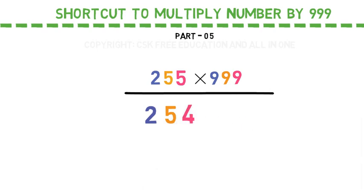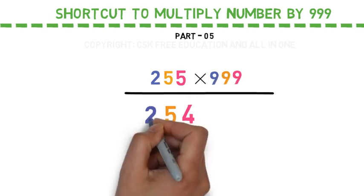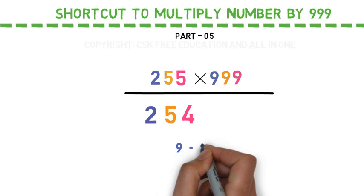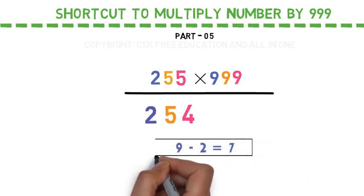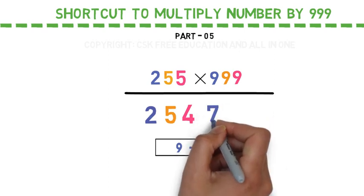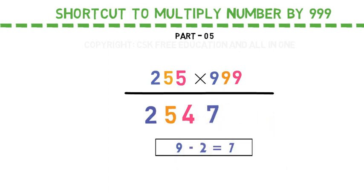Now take the leftmost 9 and subtract 2 out of it. So 9 minus 2 is 7. Write down this 7 immediately after 254.